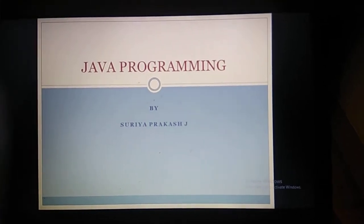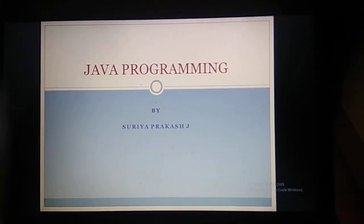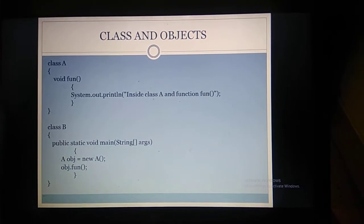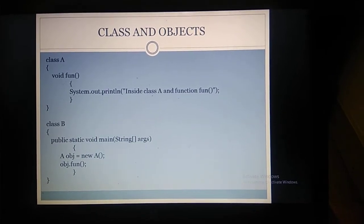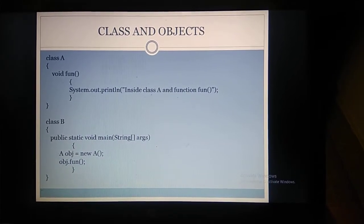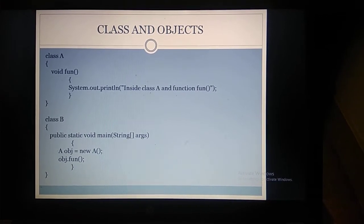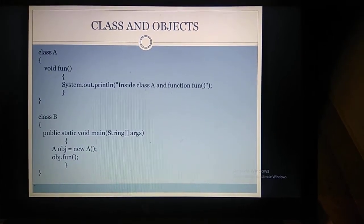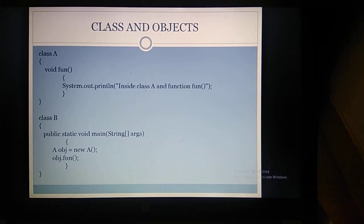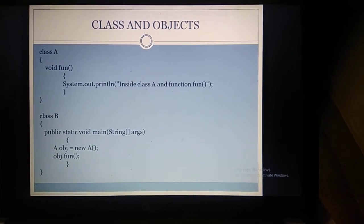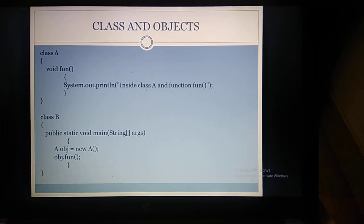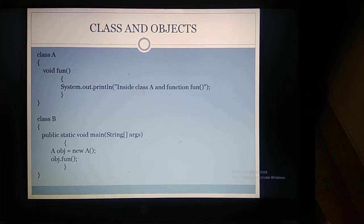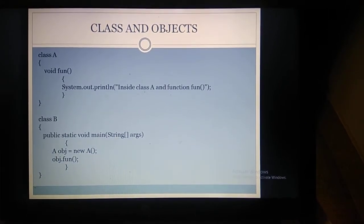Good evening students. This is the sixth lecture video on classes and objects. First, we have to understand what is a class and what is an object. Whenever we have a structured program, we have methods and variables inside the class. We can call the class inside the main function by creating an object for the class. With the use of the object, we can call the method inside the class.